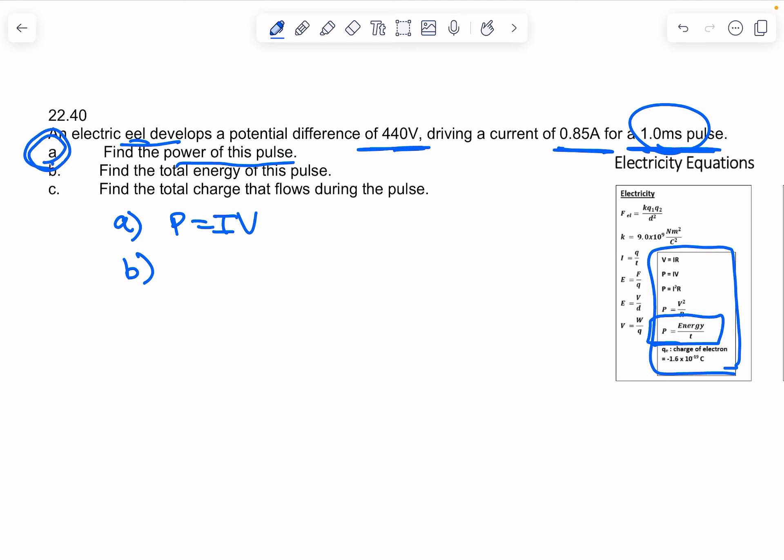So that's important—you use the power that you calculate in part a, and you'll say power is energy over time. Now note this is milliseconds, and remember what I would do is I'd say 1.0 times 10 to the minus third seconds because of milliseconds. Then just plug that in, use your calculator, and it's going to be easy to solve for E.